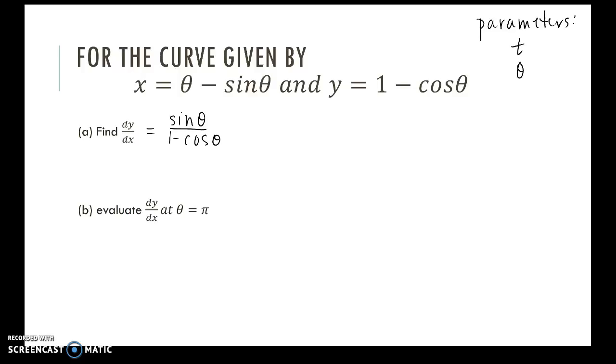Okay, so now evaluate the derivative at pi. So dy/dx. And of course, that's our parameter. So we plug in pi for theta. So sine of pi, 1 minus cosine of pi. Sine of pi is 0. Divided by 2.